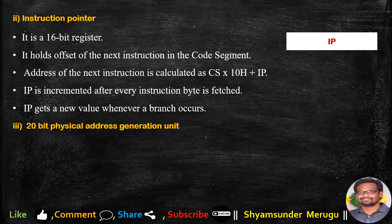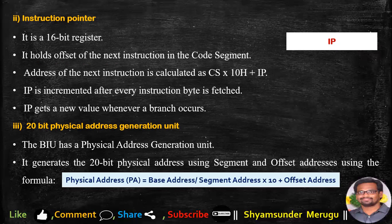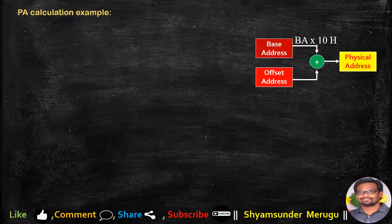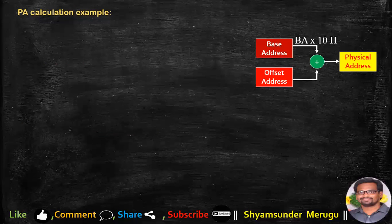Coming to the 20-bit physical address generation unit. The BIU has a physical address generation unit that generates the 20-bit physical address using segment and offset addresses. The formula is: physical address (PA) = segment address × 10H + offset address, where 10 is taken in hexadecimal. To calculate the physical address, let us take one example. We have the base address, multiplied by 10H, then added with the offset address to get the physical address. This can also be calculated in binary.